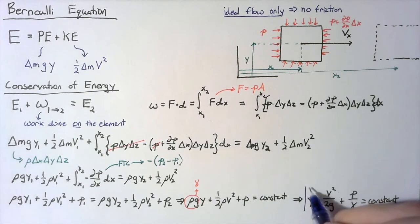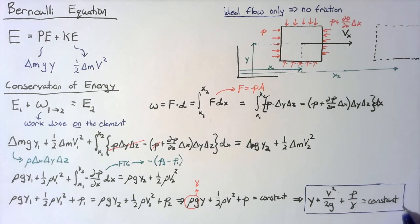So we'll be using this equation for a lot of ideal analysis of pipes, and later we'll add in what we call head loss, which will account for this friction that we're neglecting right now.